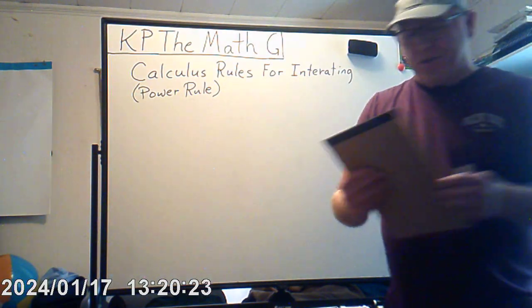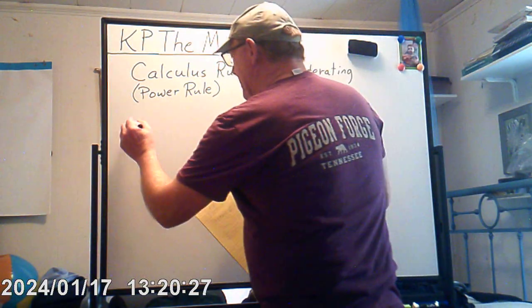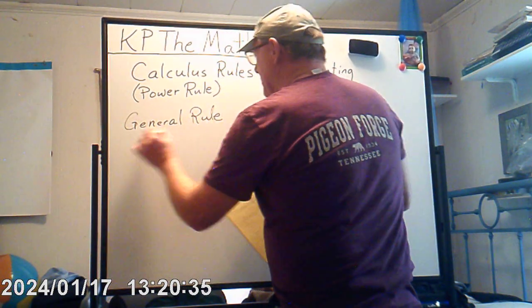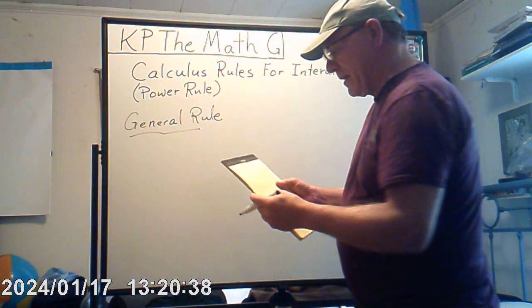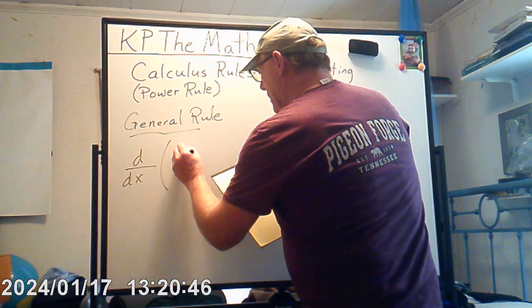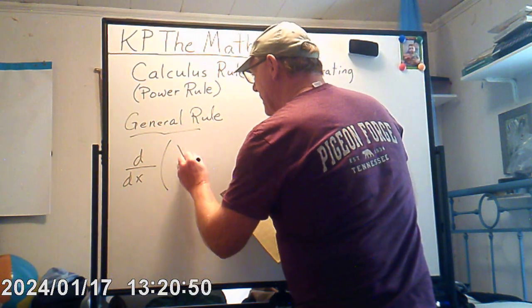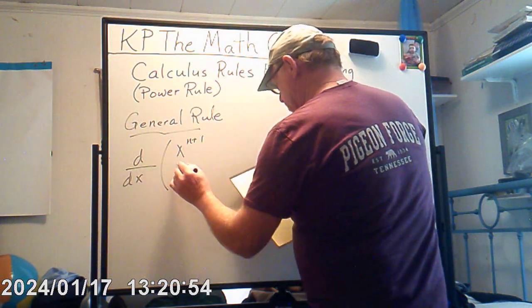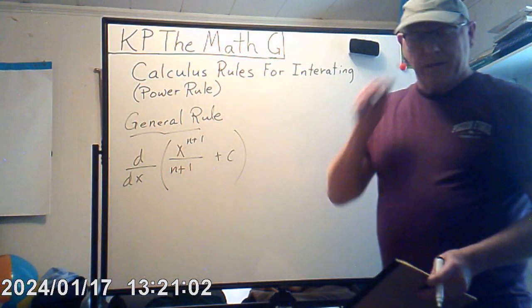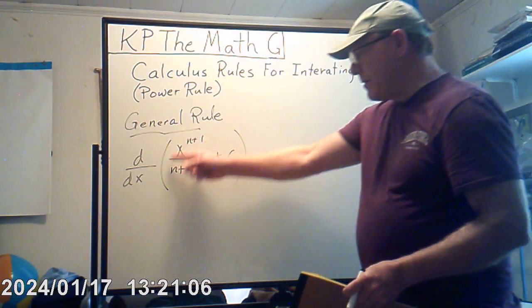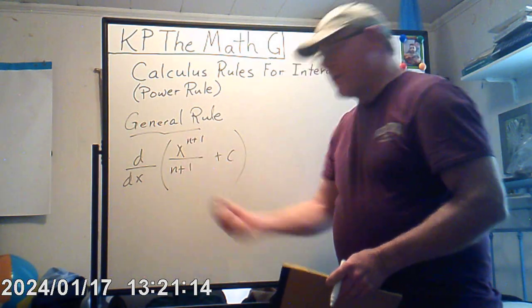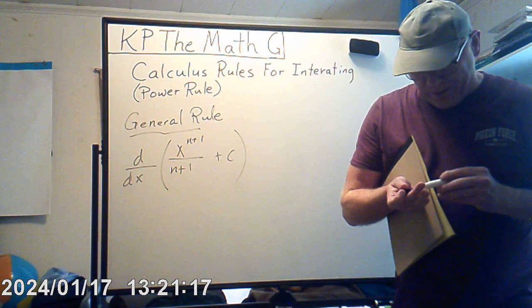Here's the general rule. When you use a general rule, you're not using a specific problem. If you take the derivative of x to the n plus 1 over n plus 1 — that looks familiar, doesn't it? That is actually the rule for integrating: you add one to the exponent and divide by that new exponent.